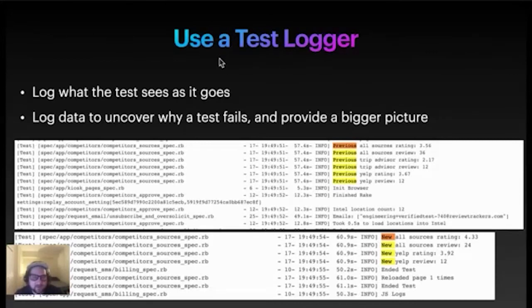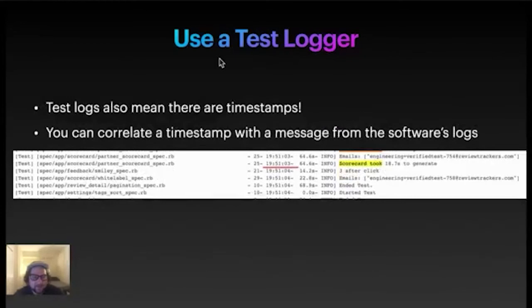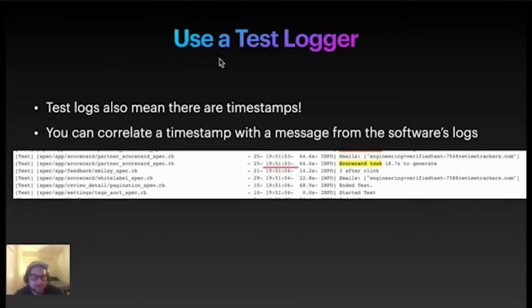That's a really cool way to do triage. Test logs also have timestamps, and you can correlate those timestamps with messages from the actual software under test logs — that's usually valuable. Here I'm highlighting a timestamp of a scorecard that's a functionality of ReviewTrackers generating in 18.7 seconds. If I ever wanted to see that scorecard generating in the software's under test logs, I can look at that timestamp and compare. When the test fails, look at the timestamps from the log messages and correlate those with your software under test.